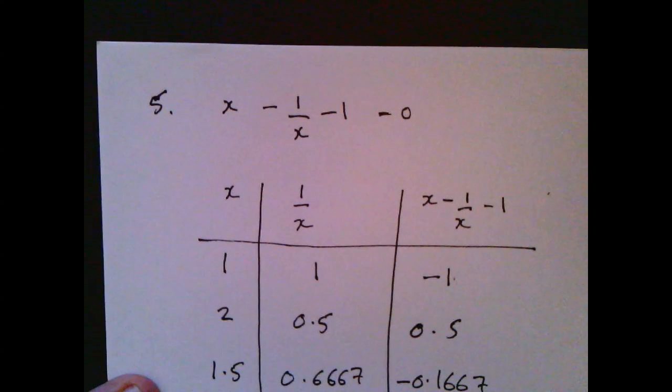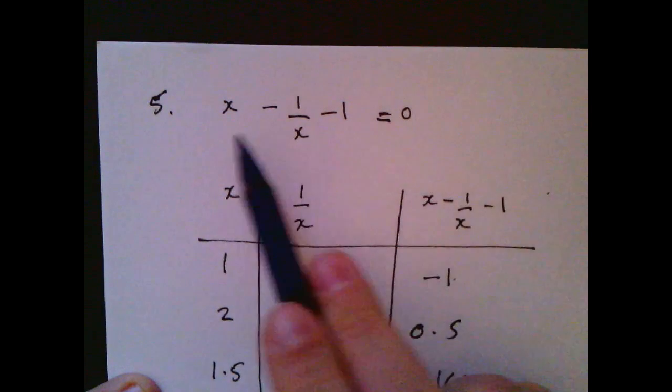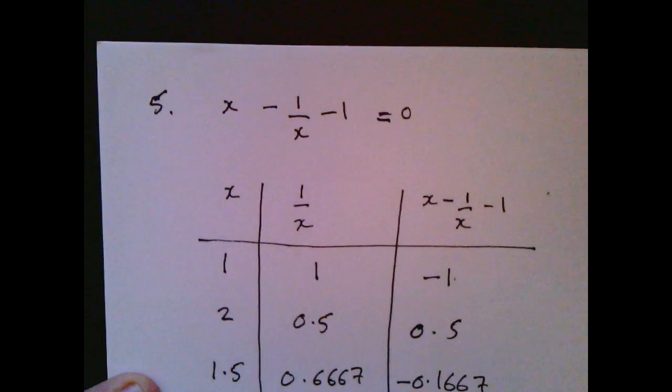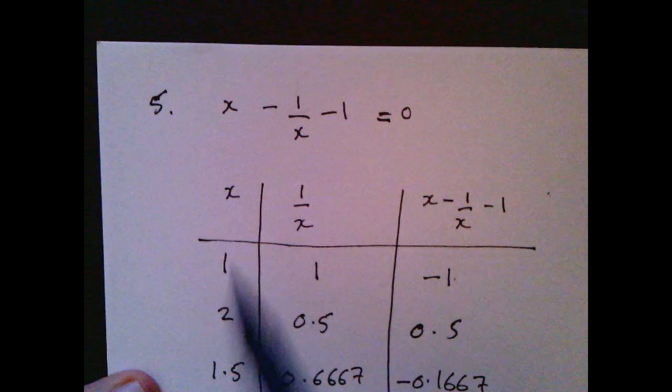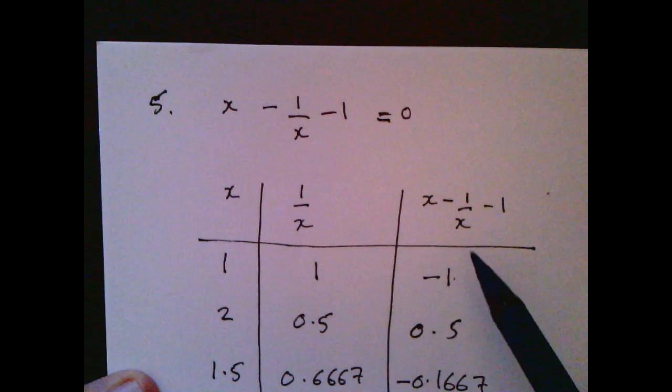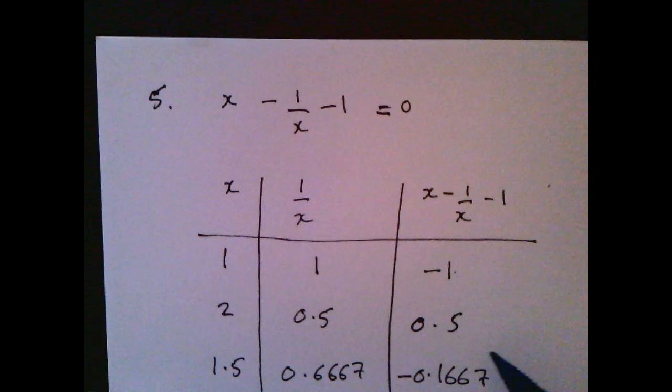Okay, the next one's a trial and improvement problem. We're given this equation: x minus one over x minus one equals zero. We're asked to plug in values of x and one over x into the table, then try to get as close as possible to zero. They've given us the first three suggestions to get as close as possible to zero to three significant figures.